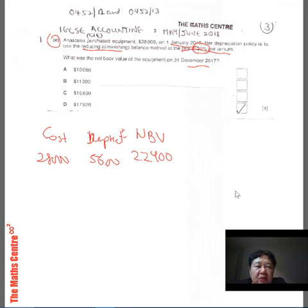This $22,400 will go on to the second year and give you depreciation of $22,400 times 20%, which is $4,480. Remember, $4,480 is the depreciation of the second year based on the netbook value.